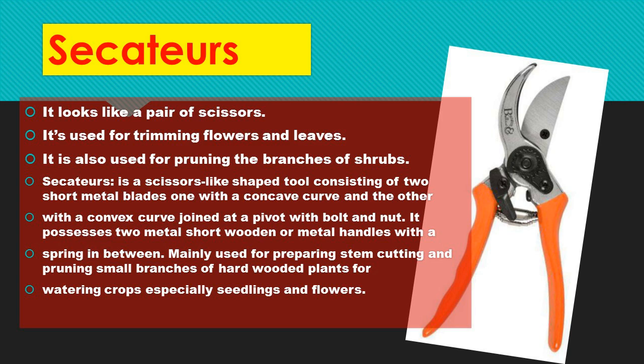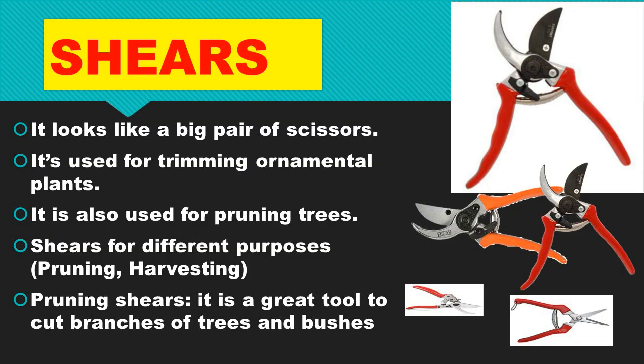Shears also look like a big pair of scissors. They are used for trimming ornamental plants and for crowning trees. We have shears for different purposes — shears for grooming and shears for pruning. Pruning shears are a great tool for cutting the branches of trees and bushes.